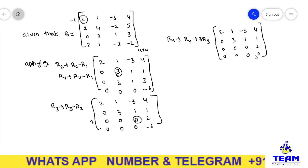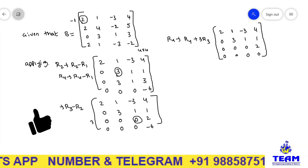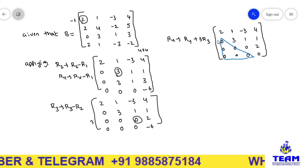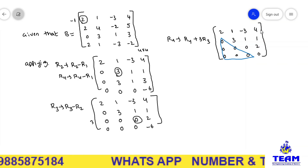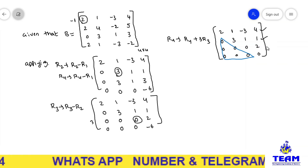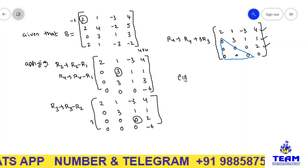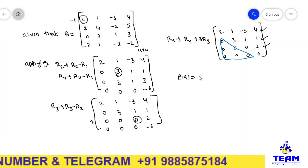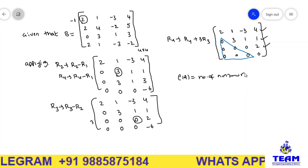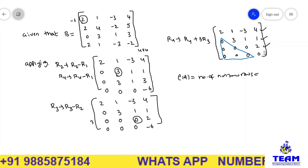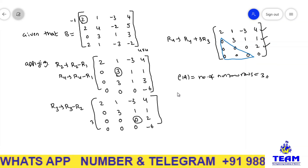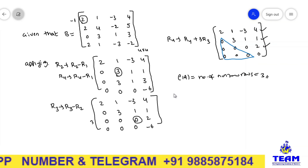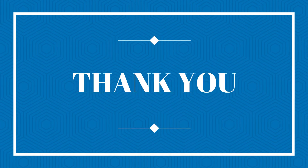Now observe — the fourth diagonal element is 0, and we have an upper triangular matrix with all elements below the diagonal equal to zero. The number of non-zero rows is 3, so the rank of matrix B equals 3. Like this we can solve many problems to find the rank of a matrix. Thank you for watching this video.